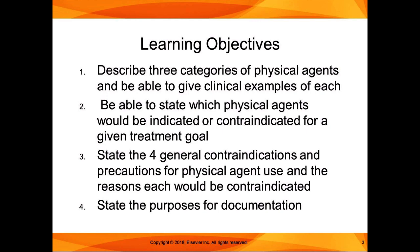For this lecture, I have four learning objectives listed in the module. First, describe three categories of physical agents and give a clinical example of each. Second, state which physical agent would be indicated or contraindicated for a given treatment goal. Third, state the four general contraindications and precautions for physical agent use and the reasons why each would be contraindicated. These are general contraindications for any physical agent used on a patient.